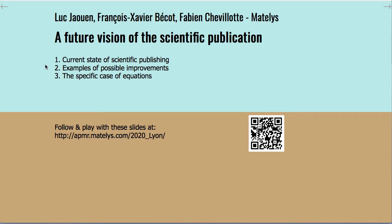In the first part I will briefly discuss the current state of scientific publishing. In the second part I will give examples of possible improvements on the way we display information in research papers. And in the third part I will discuss the specific case of equations.